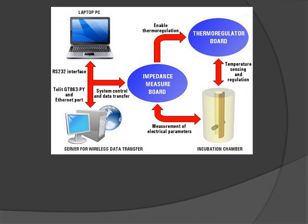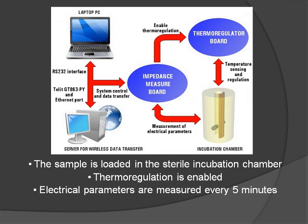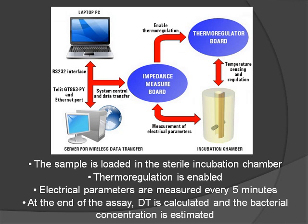A schematic of the biosensor system is shown. The measurement procedure is carried out according to the following steps. At the beginning, the incubation chamber is filled with the sample under test. Then thermoregulation is enabled and a time delay of 30 minutes is awaited to allow the sample temperature to stabilize. Once the sample temperature is stable at the target value, the electrical parameters are measured at time intervals of 5 minutes until the deviation in the measured baseline is detected. Then the detect time is calculated and the bacterial concentration is estimated based on a previously built calibration equation.